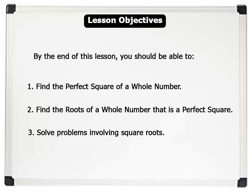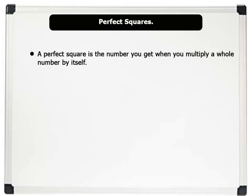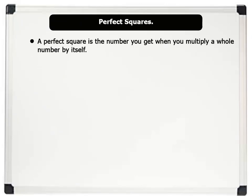Now, let us begin. A perfect square is the number you get when you multiply a whole number by itself. For example, 2 times 2 equals 4. So, 4 is a perfect square.